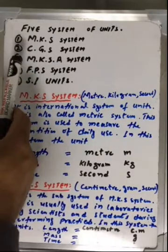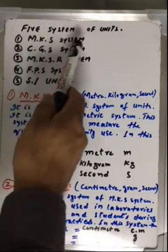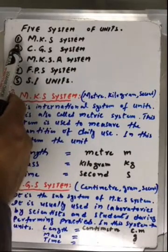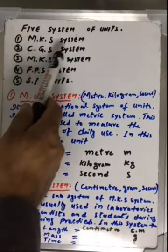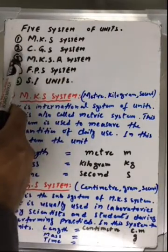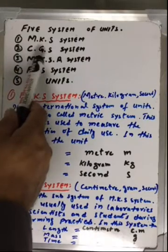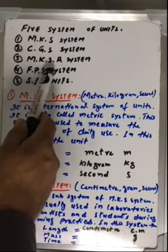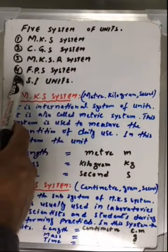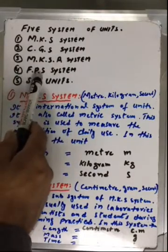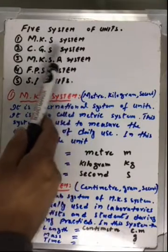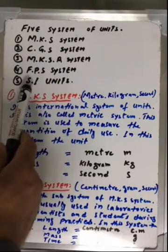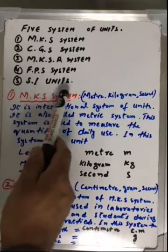There are five systems of units: number one, MKS system; number two, CGS system; number three, MKSA system; number four, FPS system; and number five, SI unit system.